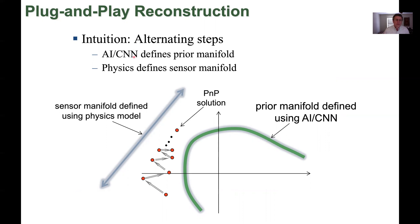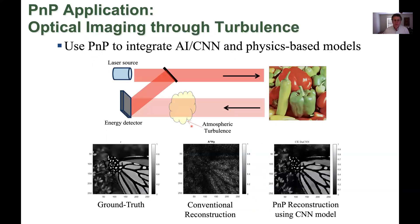One of the more recent methods that we've really been exploiting and invented is the method called plug and play, which is a way of integrating together in a mathematical framework physics-based sensor design with AI methods like convolutional neural networks. The convolutional neural networks are used to model the behavior of images, and you have the traditional physics model for the sensor. It's an iterative algorithm where you bounce back and forth and converge to a solution which satisfies both sets of constraints.